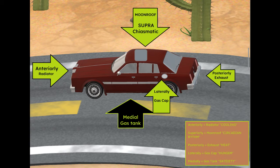Then if you go to the posterior of the car — the rear of the car — the posterior is involved with the exhaust from the engine, and that exhaust is hot. So the posterior nucleus is involved in heating.